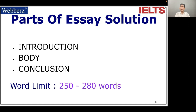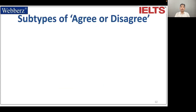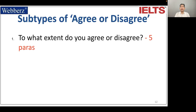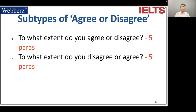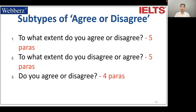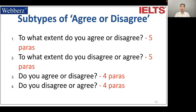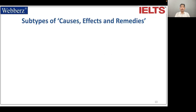The word limit is 250 to 280 words. Subtypes of agree and disagree: 'To what extent do you agree or disagree?' and 'To what extent do you disagree or agree?' — both will have five paragraphs each. 'Do you agree or disagree?' — four paragraphs. 'Do you disagree or agree?' — again, four paragraphs.